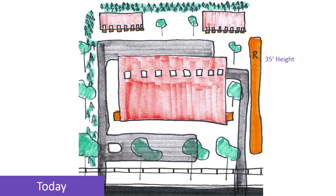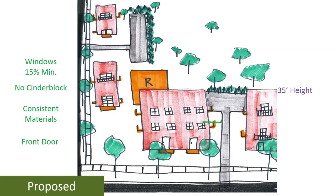Again, very similar to townhomes, we currently only have the maximum height of buildings as an aesthetic requirement. So what's being proposed — as with single-family development — are requirements for window minimums, quality of materials, consistency, and a front door.